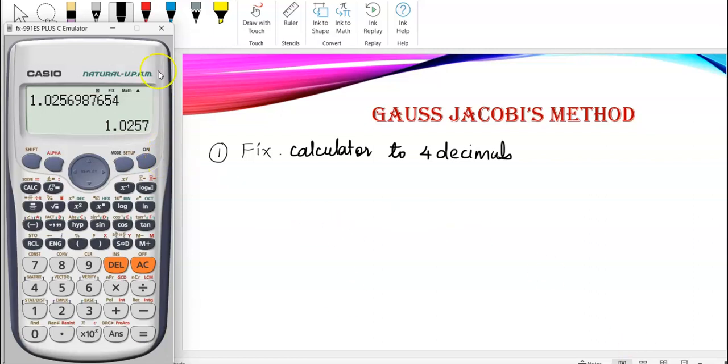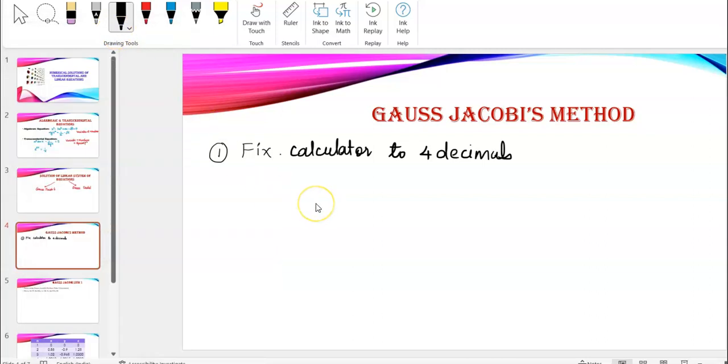So, numerical methods, entire chapter, you will fix your calculator to decimal 4, whichever method you are doing.